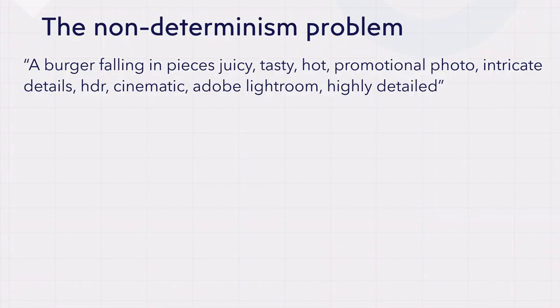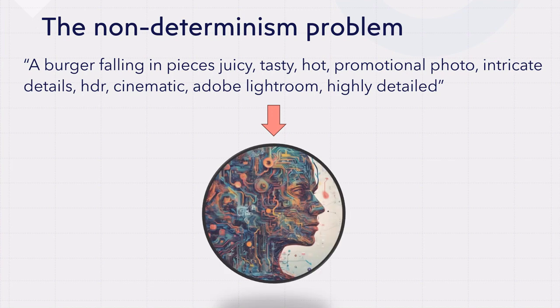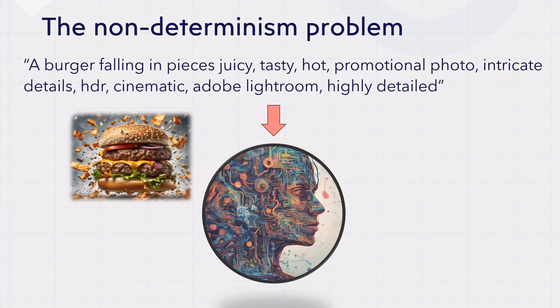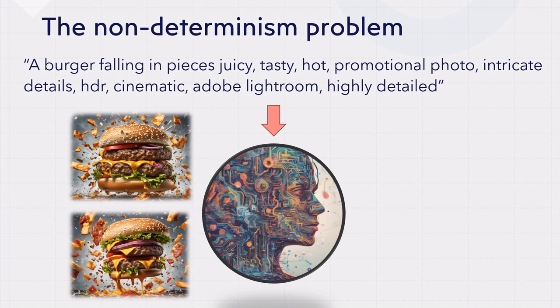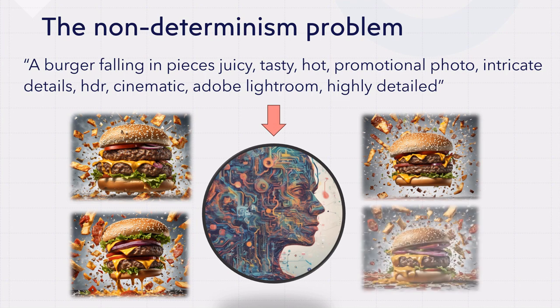Let's start with the first problem of Generative AI: the non-deterministic problem. Imagine you are talking with your stable diffusion model and you provide a description: 'I want a burger falling in pieces, juicy, tasty, hot, promotional photo, intricate details, HDR, cinematic, Adobe Lightroom, highly detailed.' You give that to your Generative AI model, and for some reason, it provides four different images of burgers — all of them with cheese, but slightly different.